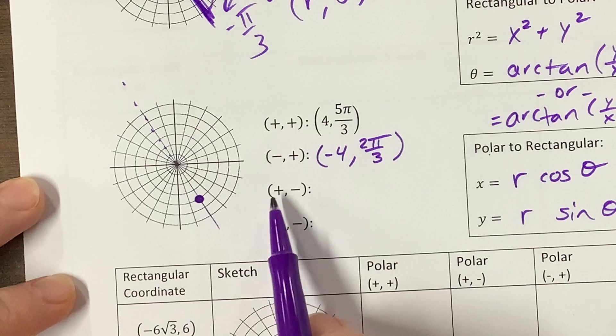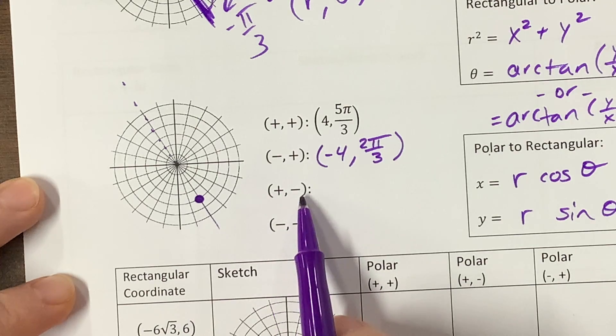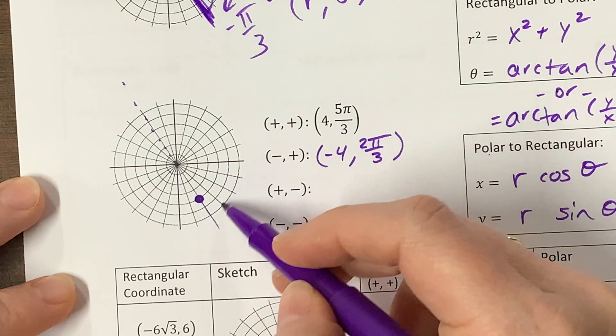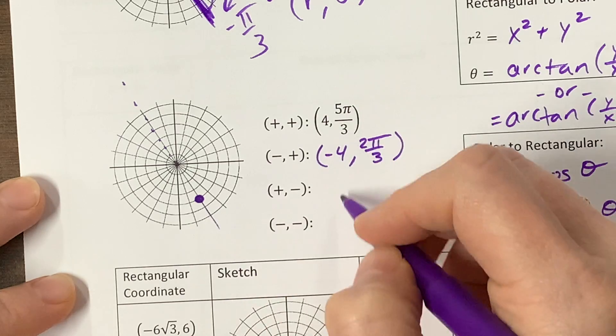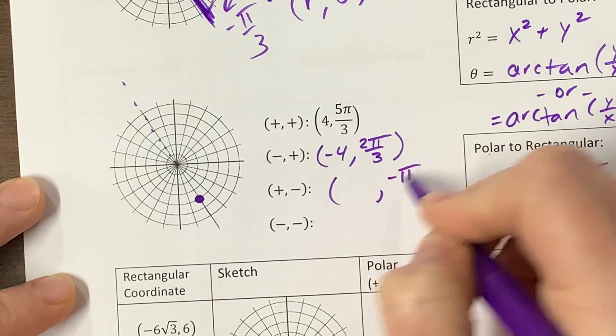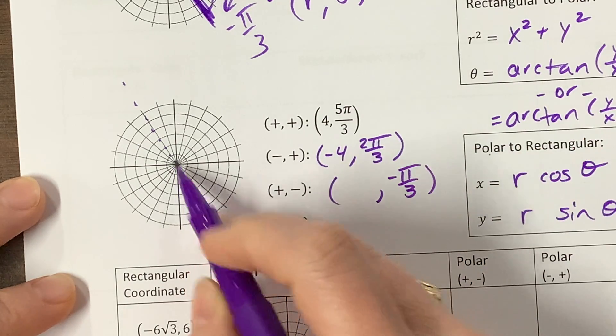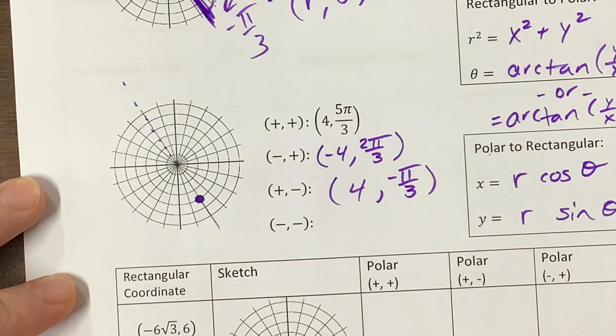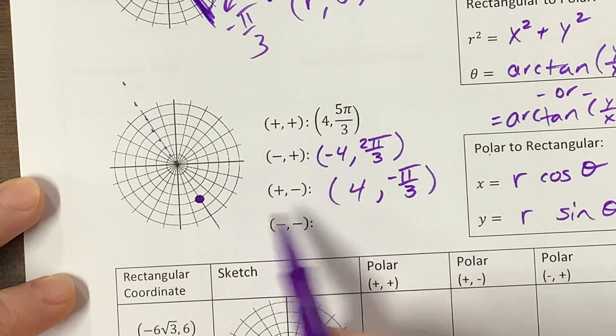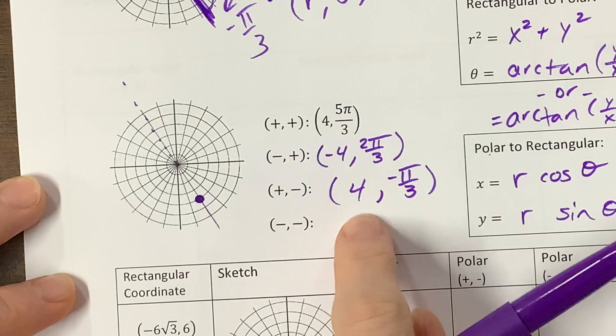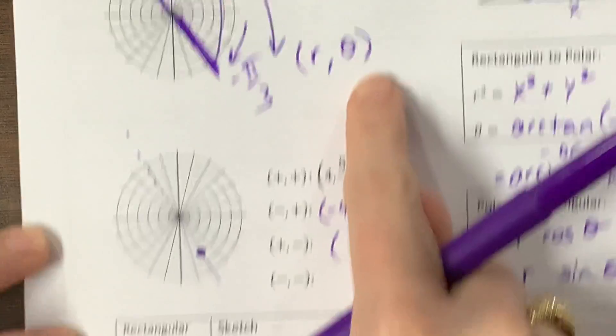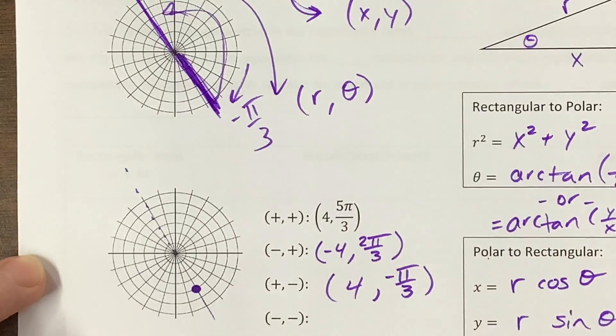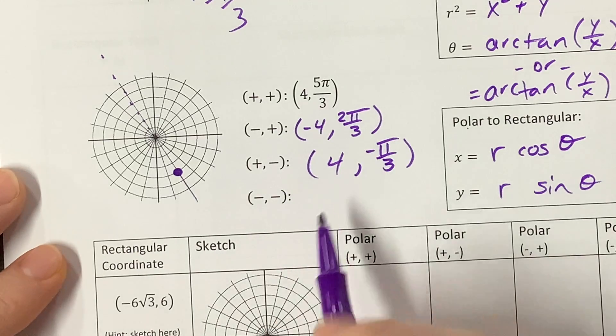Okay, we can also do it where we have a positive radius but a negative angle. So, that means I'm coming this way to get to the angle, and that's a negative π over 3. And my radius is still positive, so it's a positive 4, negative π over 3. And this is where sometimes I wish we wrote it the opposite way, where we would say theta r instead of r theta, but we don't. So, just pay attention to that. It's r theta.